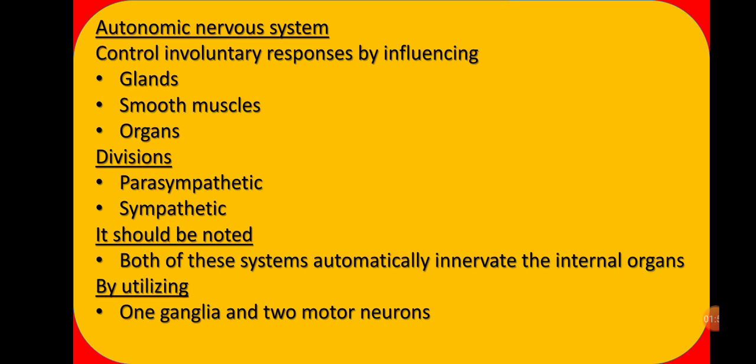The autonomic nervous system controls involuntary responses by influencing the body. Involuntary means responses that do not happen according to our will — they happen automatically inside the body. For example, the digestion of food inside our stomach is not in our control; we cannot stop it or start it. The muscles of the stomach contract and relax involuntarily. These are responses that we cannot consciously control, and they are called involuntary responses.